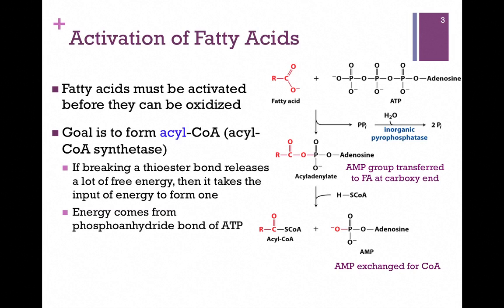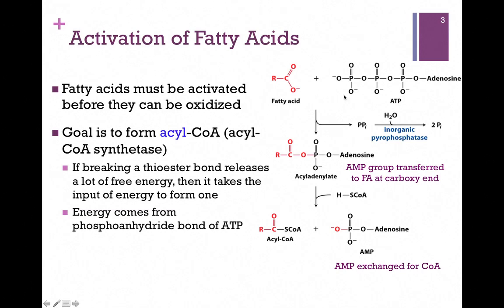We're eventually going to form a thioester bond in our product. As we know, if we break a thioester bond it releases about 31 kilojoules of energy, so if we want to form that bond, we have to input that much energy. In this case, that energy is going to come from breaking one of the phosphoanhydride bonds in ATP.